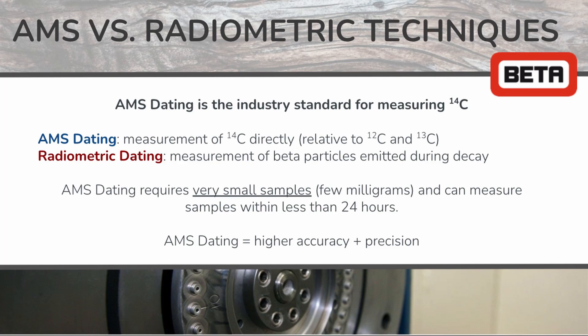The minimum sample requirements for AMS dating are significantly smaller than radiometric dating techniques, allowing even a few small milligrams of sample to be dated for certain sample types. This means that very small sample types such as blood particles, grains, seeds, small artifacts, or very expensive or rare materials can be easily dated using this AMS technique.